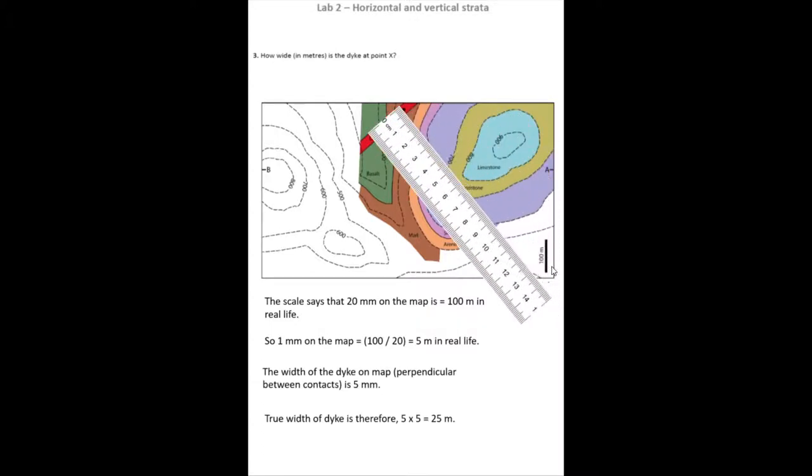Then to work out the width of things like dikes, we take the thickness perpendicular to the contacts. And we see that on our map, the width of the dike is about 5 millimeters. So we take that 5 millimeters and multiply it by our scale factor and shows that our 5 millimeter dike is actually 25 meters wide in real life.